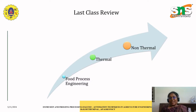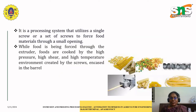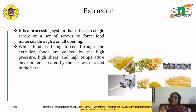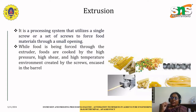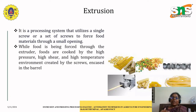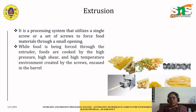Today we'll see the exclusive method — extrusion processing. Extrusion is a processing system that utilizes a single screw or a set of screws to force food materials through a small opening, similar to the molds used in preparing snacks. In the extruder, food is cooked by high pressure along with shear and temperature. This environment is created by screws encased within a barrel, as shown in this picture.